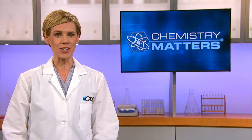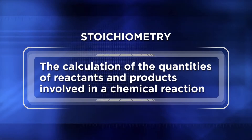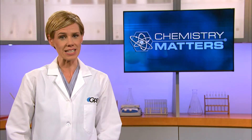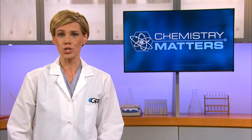Welcome back to Chemistry Matters and our unit on the mole and stoichiometry. At the beginning of this unit, we examined how stoichiometry was the calculation of the quantities of reactants and products involved in a chemical reaction. In stoichiometric problems, you'll use a balanced chemical equation to help you calculate the amount of reactants needed for the reaction to occur or the amount of product produced.